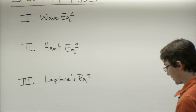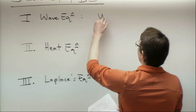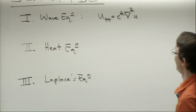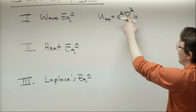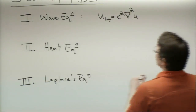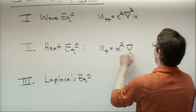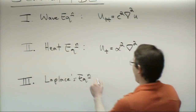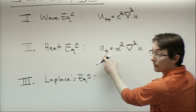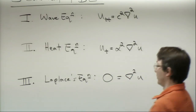The wave equation is u_TT equals c² times ∇²U — the second partial derivative in time equals a positive constant squared times the Laplacian. The heat equation is u_T equals α times ∇²U — first partial in time, same spatial Laplacian. And Laplace's equation is simply ∇²U equals zero. In 1D the wave equation becomes u_TT = c² u_xx, and the heat equation becomes u_T = α u_xx.